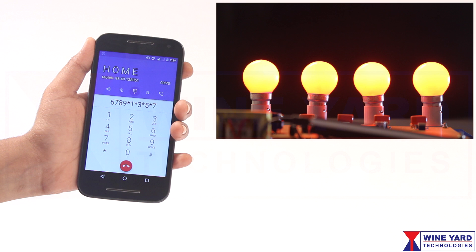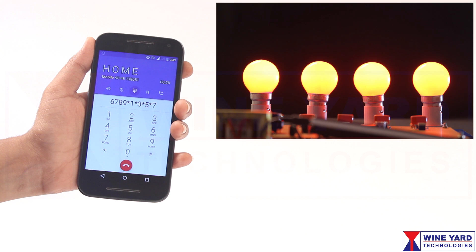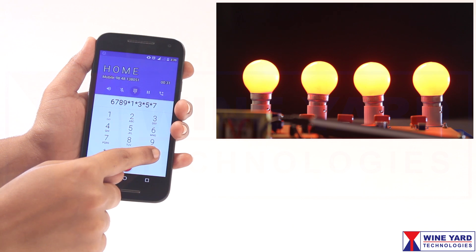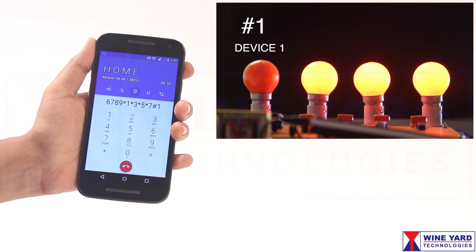Now all the devices are in ON state. To make the devices OFF, let us take the code hash. Now enter #1 to make the first device OFF.